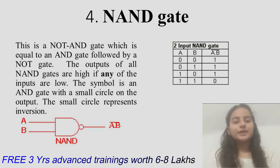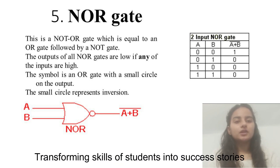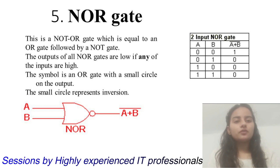Fifth, NOR gate. We call it NOT OR gate because it possesses both properties of OR gate followed by NOT gate. Outputs of all NOR gates are low if any input is high.